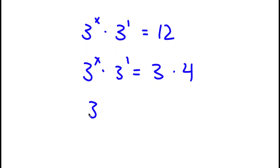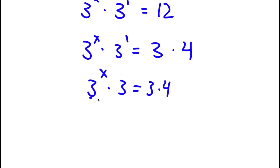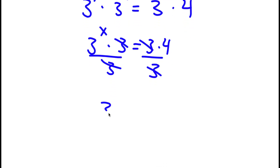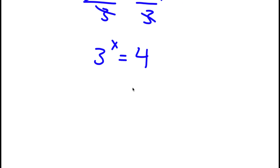Now, 3 to the power of 1 is the same thing as 3, so I have 3 to the power of x times 3 equal to 3 times 4. I divide both sides by 3 — these two cancel out — and I'm simply left with 3 to the power of x is equal to 4. Now, 4 is the same thing as 2 to the power of 2, so I have 3 to the power of x equal to 2 to the power of 2.